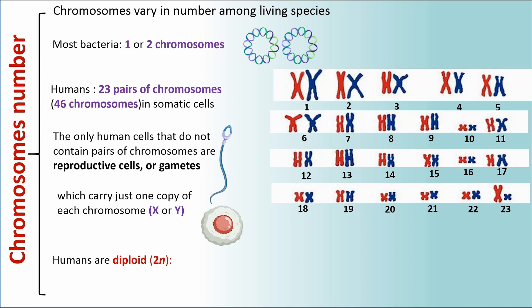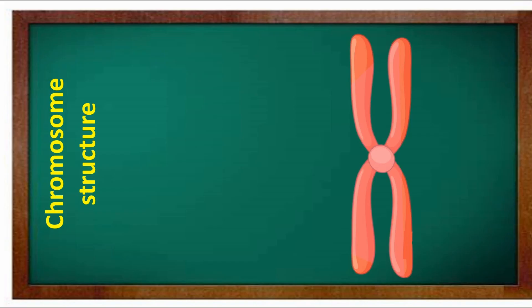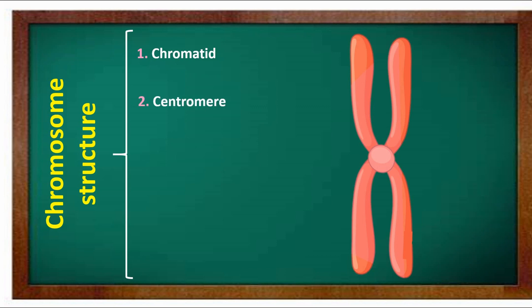Humans are diploid, 2N, meaning that all of their chromosomes come in matched sets known as homologous pairs, with the slight exception of the X and Y chromosomes, which are said to be haploid, 1N. Chromosome structure has five parts: chromatid, centromere, kinetochore, satellite, and telomere.